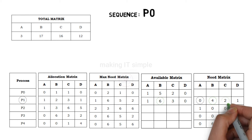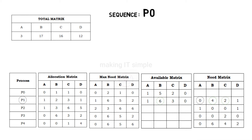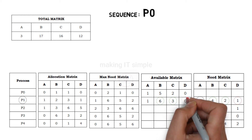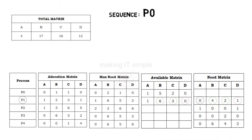Next it requires 2 instances of resource C, and we have 3 instances free, so we can fulfill this need. Next it requires 1 instance of resource D, but we do not have any instances left of resource D. We can provide resource A, B, and C but we cannot provide resource D. So we cannot fulfill the need of process P1, we need to move ahead.